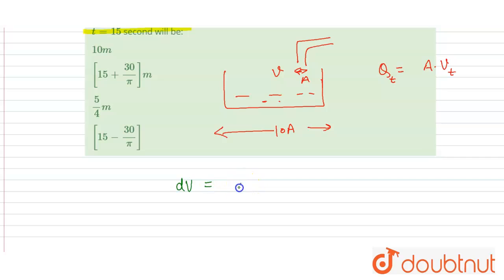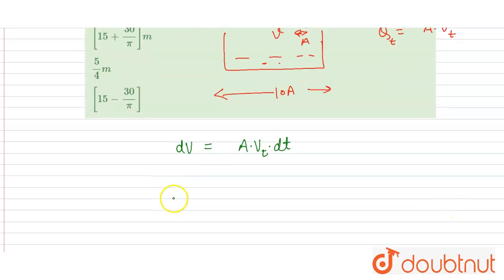Now what will be the total volume? For the total volume we will integrate, so v equal to integral of dv, and it will be equal to A, area is 10A, into integration of, and v is given 1 minus sin pi t divided by 30, into dt.